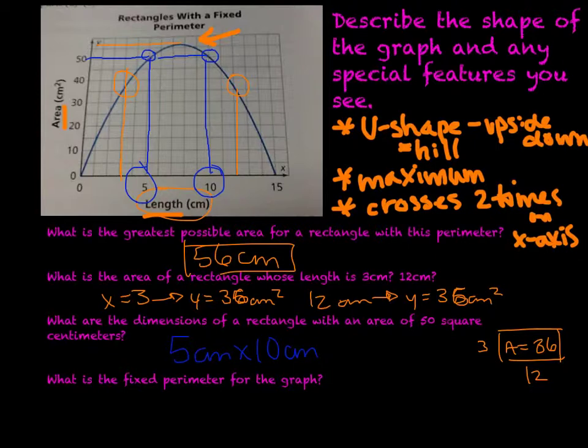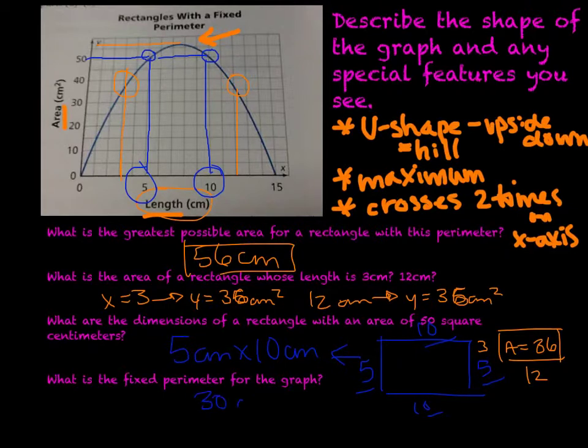What is the fixed perimeter for the graph? If we have a 5 by 10 centimeter situation, we have a rectangle with 5 centimeters here, 5 centimeters here, 10, and 10. So my fixed perimeter would be all of those numbers added up: 5 plus 10 plus 5 plus 10, or 30 centimeters would be equal to the perimeter.